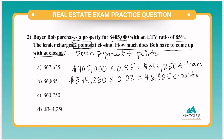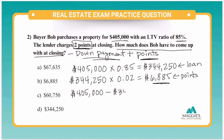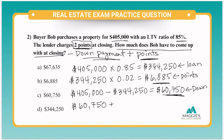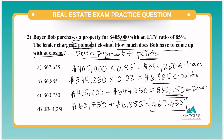Now let's find out how much in a down payment they're going to need. We already found how much they have in points to pay, which is $6,885. So now all we have to do is find the down payment amount by subtracting the purchase price of $405,000 minus the loan amount of $344,250. That'll give us a down payment amount of $60,750. So all we have to do now is add those two totals: $60,750 plus $6,885 will give us a total that the buyer needs to come up with at closing of $67,635. So the answer here is A.